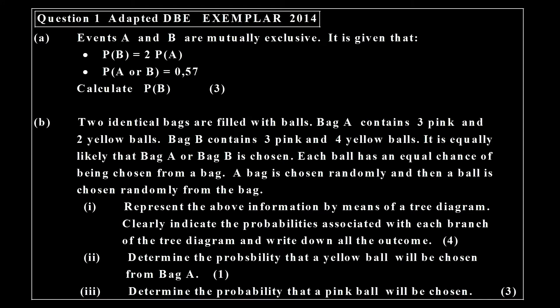Now let's look at the solutions to Exercise Worksheet 8. This was a question adapted from the DBE Exemplar 2014 paper. In the first question here you are given two events and it's stated that they are mutually exclusive, and you have some given information and then we have to calculate the probability of event B.